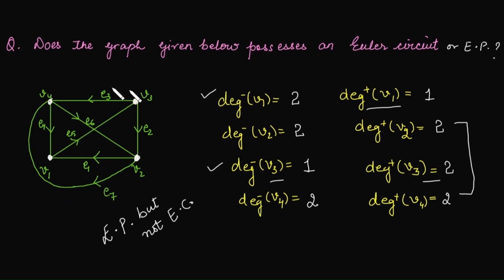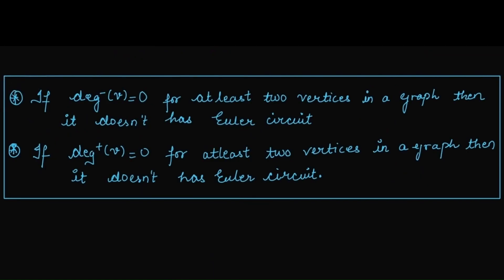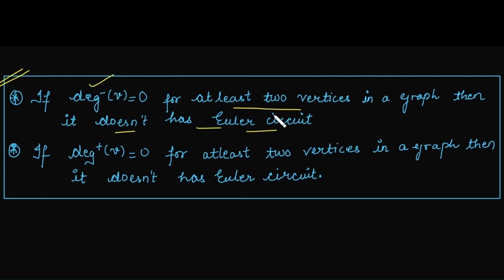You can now find the Euler path for this graph and comment below. There are two quick tricks to identify that a graph does not have an Euler circuit: first, if there exist at least two vertices whose in-degree is 0; second, if there exist at least two vertices whose out-degree is 0, then definitely that graph does not have an Euler circuit.